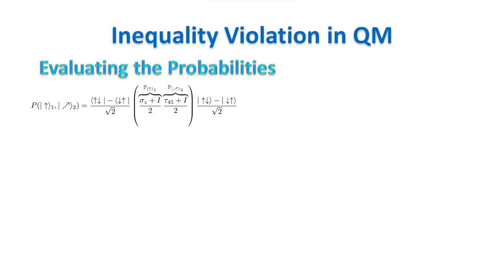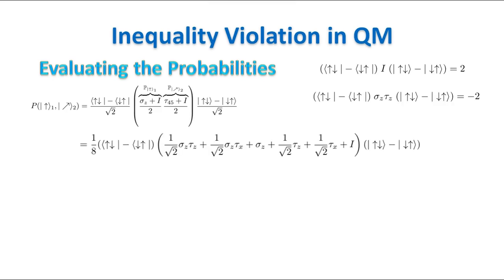We can now calculate the probabilities. We start from the left-hand side of the inequality. We write the expectation value of the projector operator, which is composed of the product of the projector operators for the two separate measurements on the two particles. We use the definition of sigma along the 45-degree axis in the x-z plane, and we do a bit of algebra. We get several terms, and some give no contribution. For example, we have already shown that terms like tau z, sigma z, and tau x have zero expectation value.